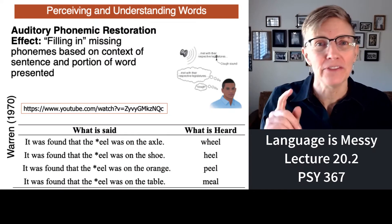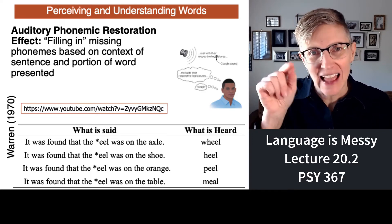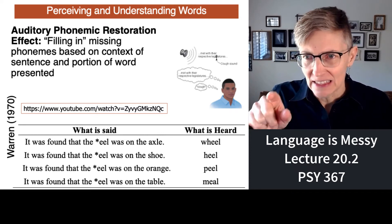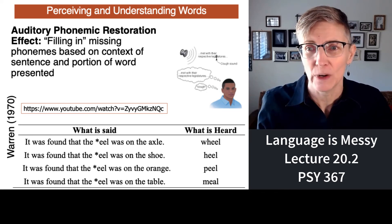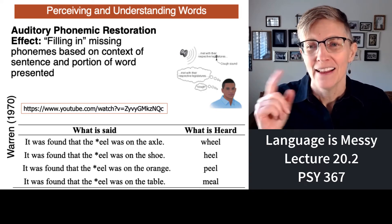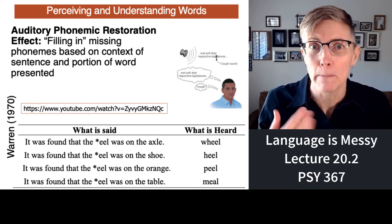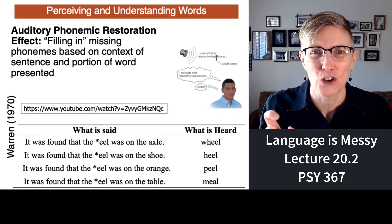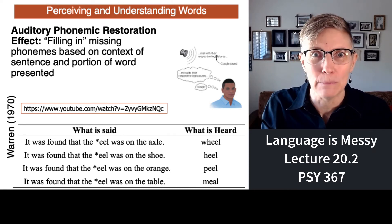Another example of the phonemic restoration effect was done by Warren back in 1970. The sentences on the slide have an asterisk where a sound was removed. If I say 'it was found that the *eel was on the axle' — with a cough blocking the first sound — people hear 'wheel.' For a sentence about a shoe, they hear 'heel'; about an orange, 'peel'; about a table, 'meal.' Amazingly, the context effect works backwards in time — you don't have enough context until the end of the sentence, and we don't even notice it.